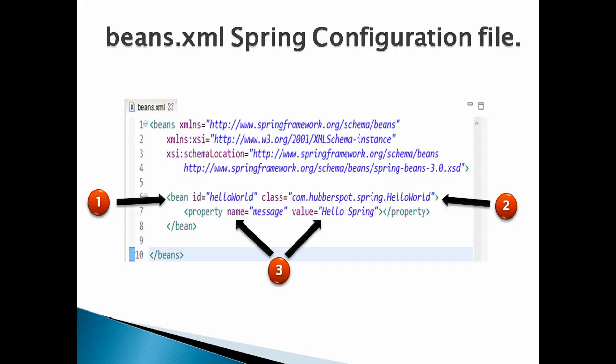We provide a bean definition for the HelloWorld bean. The 'bean' tag has an 'id' attribute whose value is 'helloWorld' — the id of a Spring bean should be unique throughout the Spring configuration file. Number 2: associate a class with this unique id using the 'class' attribute to provide the fully qualified class name. In our case, the fully qualified class name is com.hubberspot.spring.HelloWorld. The Spring container will be responsible for instantiating and controlling this bean.